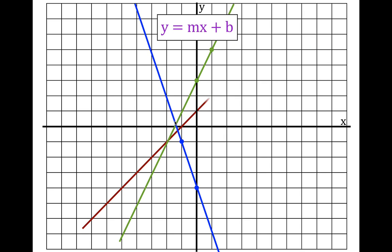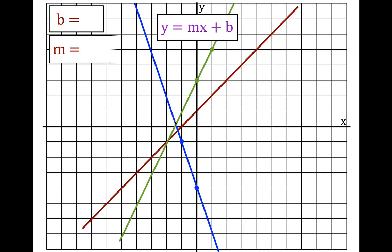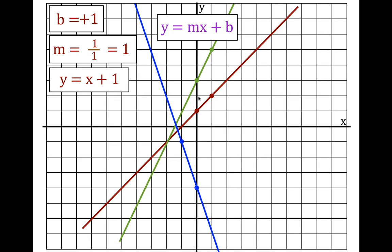This last line: b equals, m equals. It crosses the y-axis right at plus one. Looking along the line, it crosses every grid point — we go up one and over one, up two and over two, up three and over three. Each of those gives one over one, which equals one. We don't write the one when the slope is one — we just write x. So the equation is y equals x plus one.